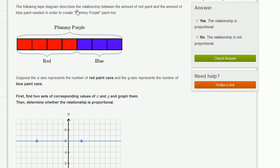The following tape diagram describes the relationship between the amount of red paint and the amount of blue paint needed in order to make plummy purple paint mix. They show us here that for every four parts red, you need three parts blue.